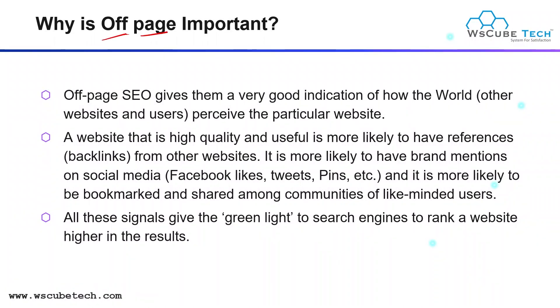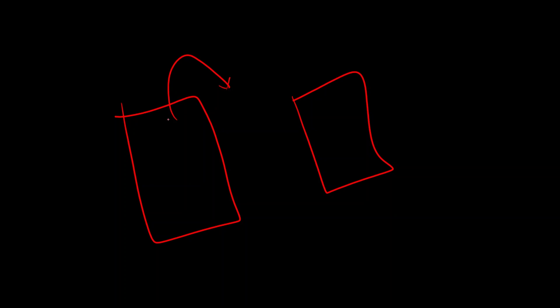So why is off-page SEO important? As we already do on-page SEO of our website, is it really important to do off-page SEO? Yes, it is really important. Because off-page SEO gives a very good indication of how the world — meaning other websites and other users — perceive a particular website. In the case of off-page SEO, we can do activities outside the boundaries of our website. For example, if we have a website like www.example.com, we create a link on other websites that have high quality.